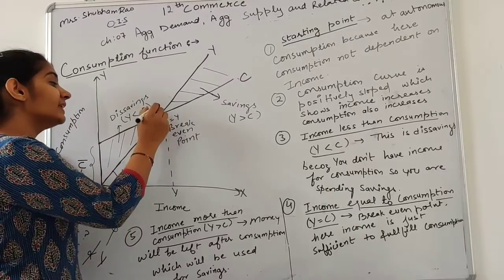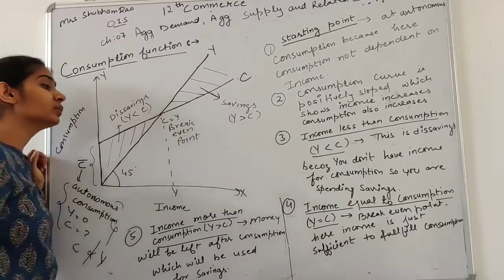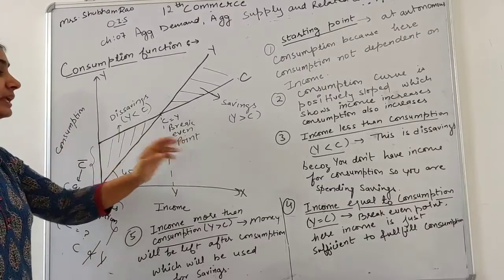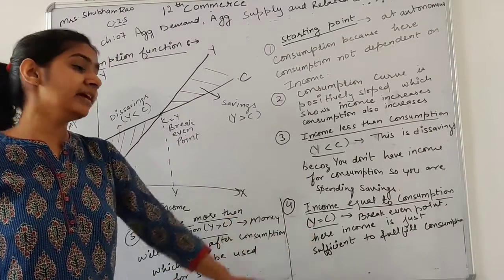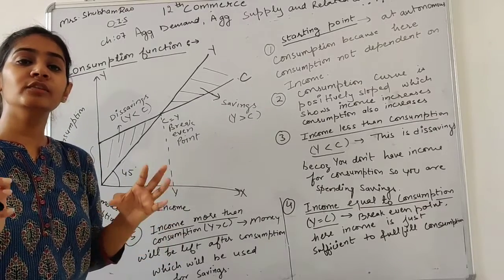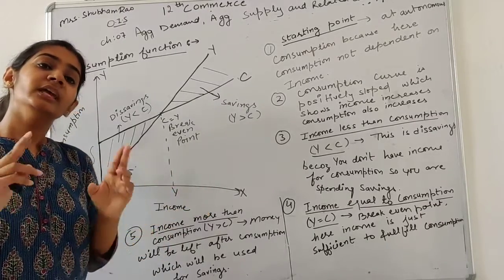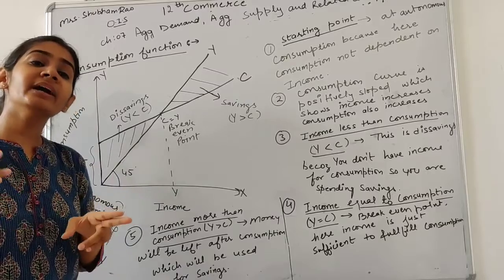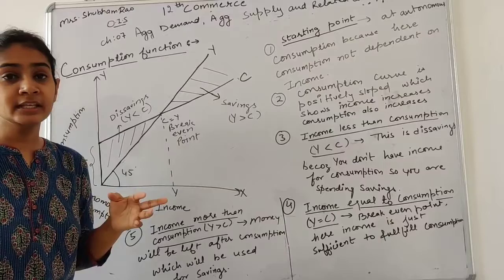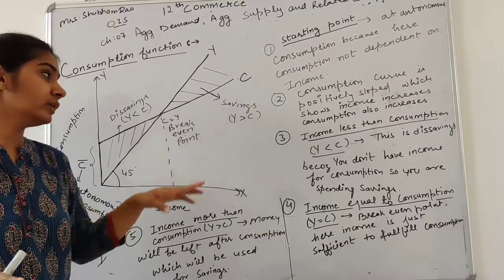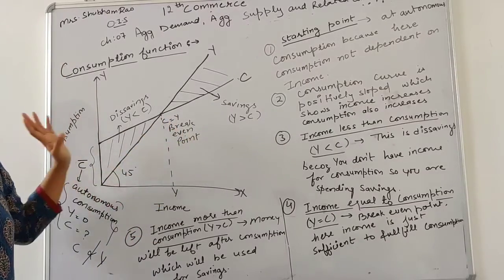After this, this point, which means income equals consumption. For just about our consumption, the income is assessed, so that we don't have any extra budget or savings. This is what we call break even.